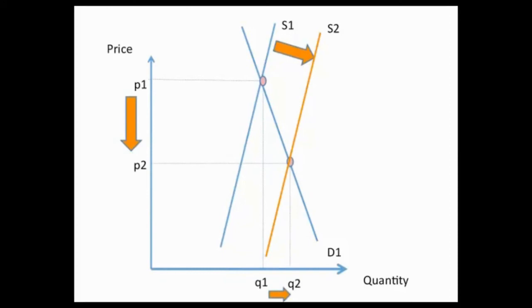Notice in the example we've got that this new equilibrium has a significantly lower price and a relatively smaller increase in the quantity. The shift in supply has mainly affected price because demand is price inelastic. So when demand is price inelastic, changes in supply affect price more than quantity.